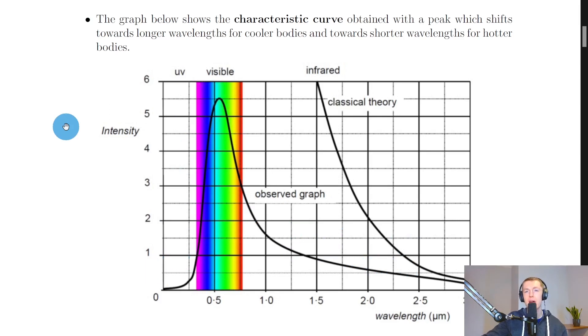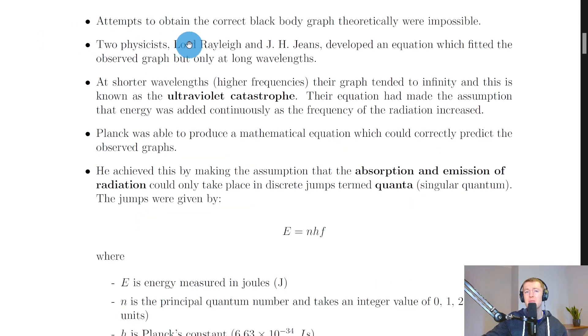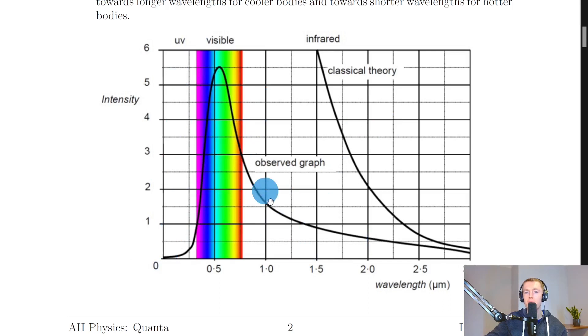Now we're going to look at how the ultraviolet catastrophe arose based on this. Attempts to obtain the correct blackbody graph theoretically were impossible. Two physicists, Lord Rayleigh and J.H. Jeans, developed an equation which fitted the observed graph but only at long wavelengths.